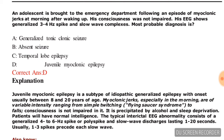Next question: an adolescent is brought to the emergency department following an episode of myoclonic jerks in the morning after waking up. His consciousness was not impaired. His EEG shows generalized 3-4 Hz spike and slow wave complexes. The most probable diagnosis is — options are generalized tonic-clonic seizures, absence seizure, temporal lobe epilepsy, or juvenile myoclonic epilepsy. The correct answer is juvenile myoclonic epilepsy — option D.